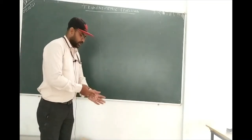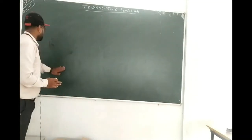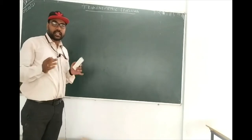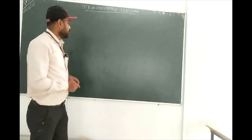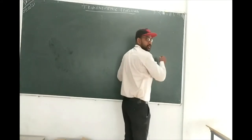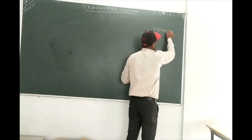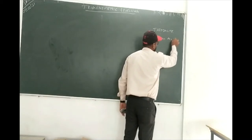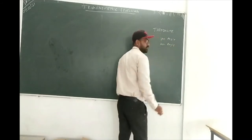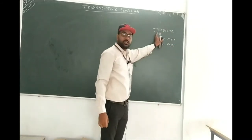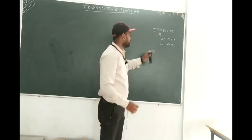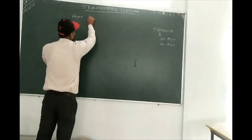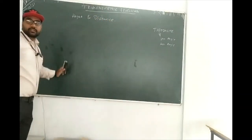Good morning everyone. Today we're going to discuss trigonometric survey. This topic was also covered in online classes, but now we're going to discuss the derivation part. Basically, this trigonometric survey is done using a theodolite. Using the theodolite, we can take vertical and horizontal angles, and with the help of trigonometry, we're going to calculate height and distance.